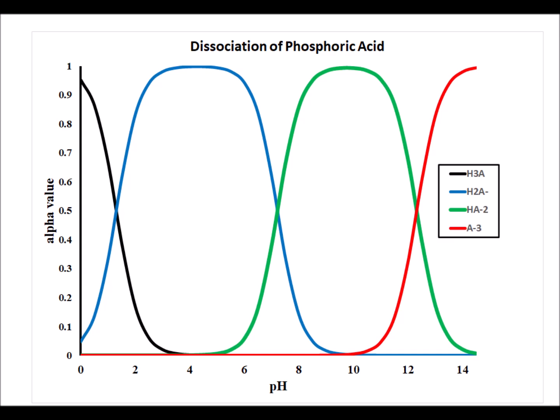Hello. In this video, we are going to show how to prepare an Excel worksheet to be able to generate a graph of the alpha values of a triprotic acid, specifically in this case, phosphoric acid.